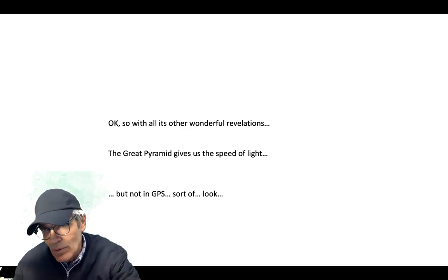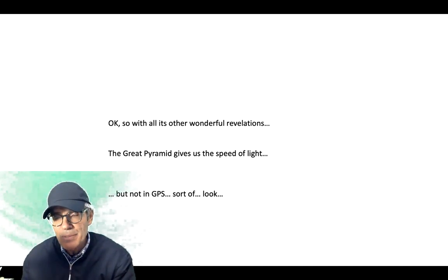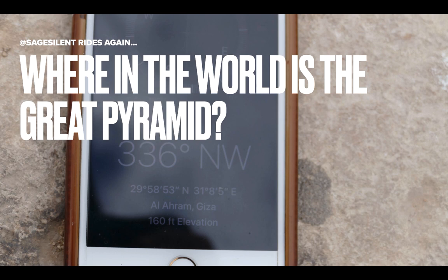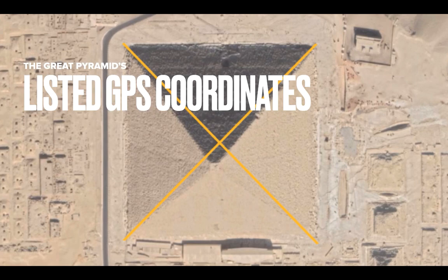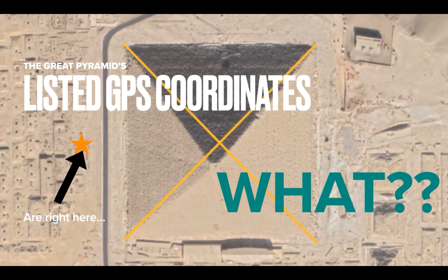The Great Pyramid gives us the speed of light, but not in GPS coordinates. So welcome — where in the world is the Great Pyramid? It seems like an obvious enough question. Does it somehow have a relationship with the speed of light? Sometimes you hear that the GPS coordinates for the Great Pyramid are the same as the speed of light. A lot of satellite images distort the Great Pyramid because they're not taken straight dead center, so you sometimes have to put diagonals to determine where the center is. The Great Pyramid's listed GPS coordinates — well, they're right there. How could that be? The Great Pyramid is not even there.